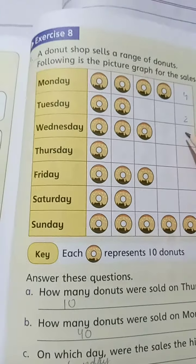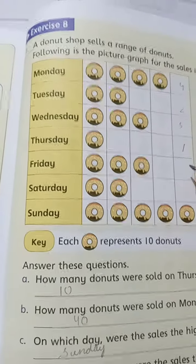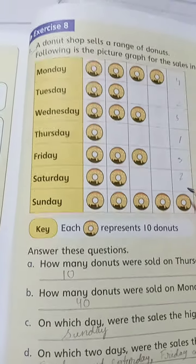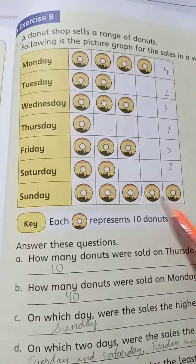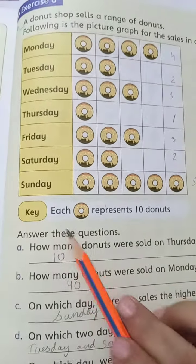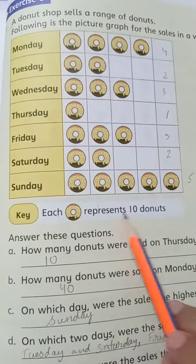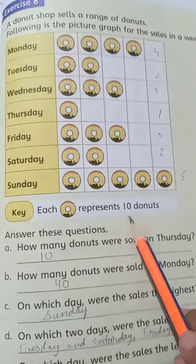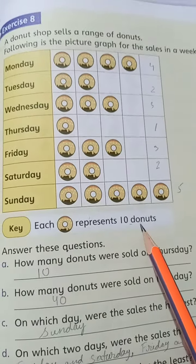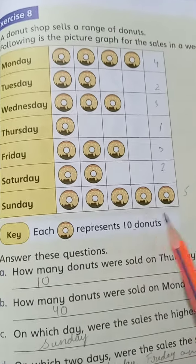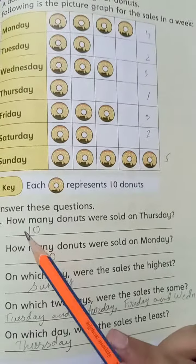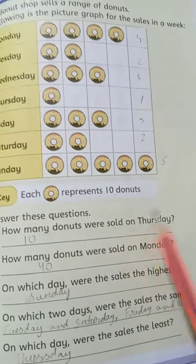Tuesday has 2. Wednesday has 3. Thursday has 1. Friday has 3. Saturday has 2. Sunday: 1, 2, 3, 4, 5. So Sunday has 5 donuts.